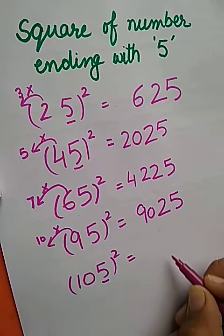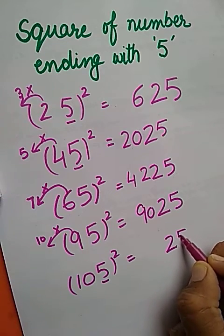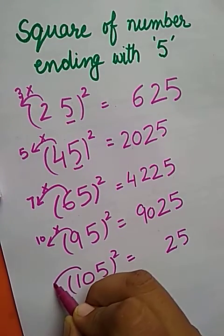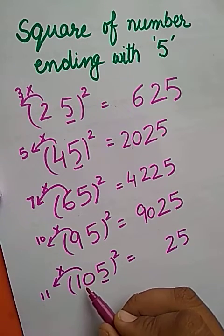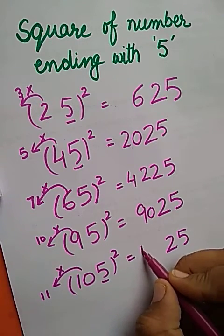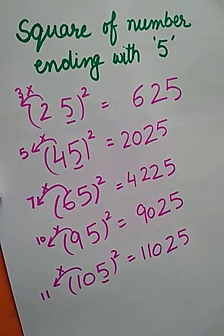We will multiply 11 by 10. 11 tens are 110. So square of 105 is 11,025.